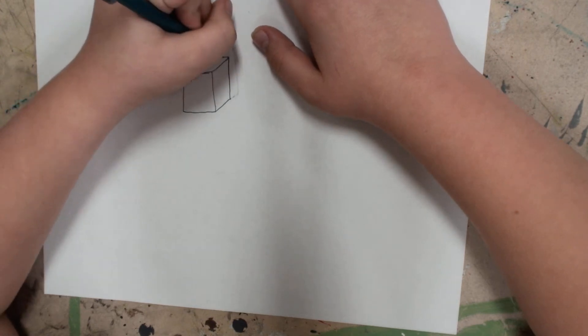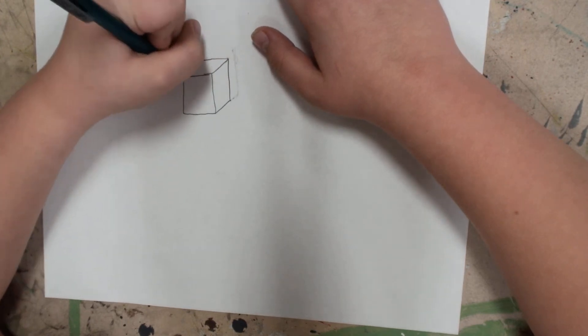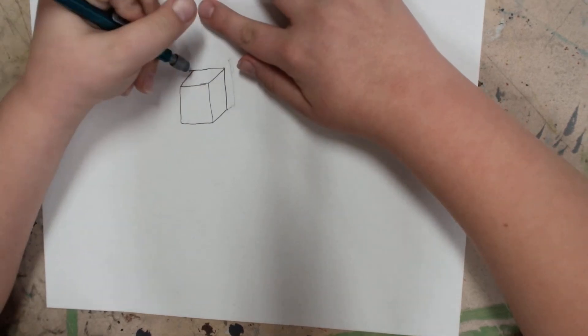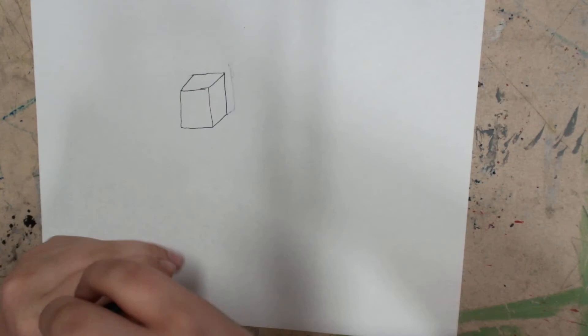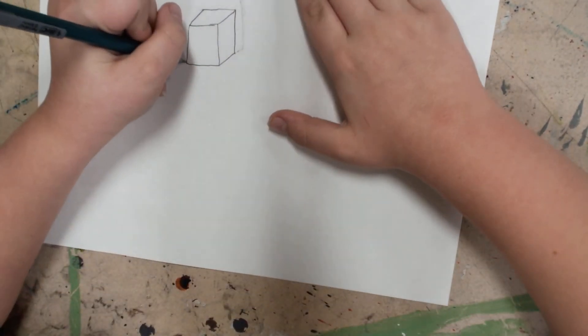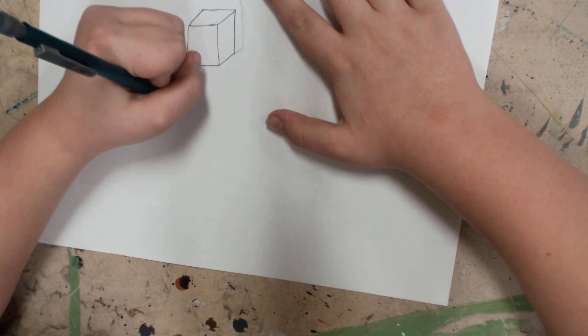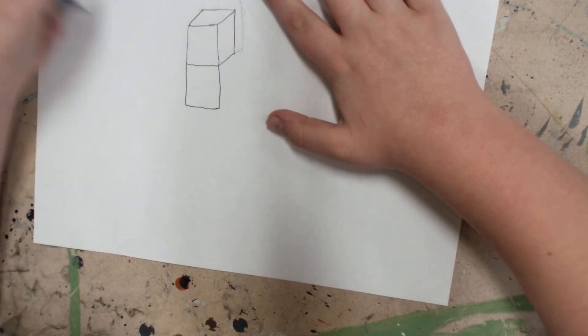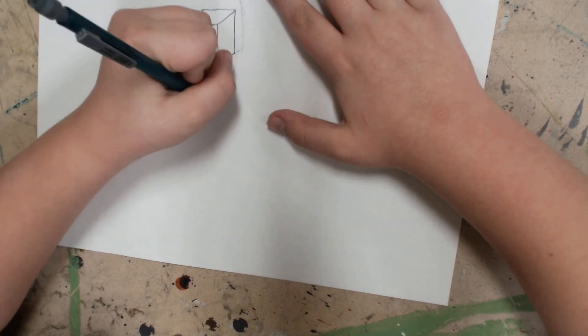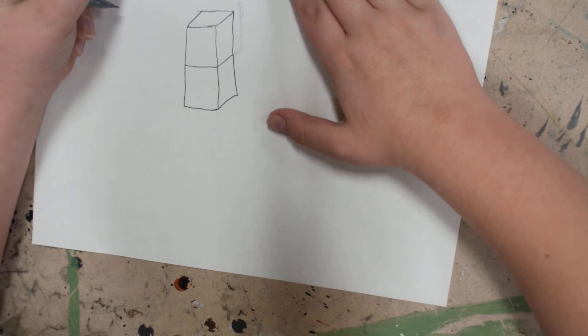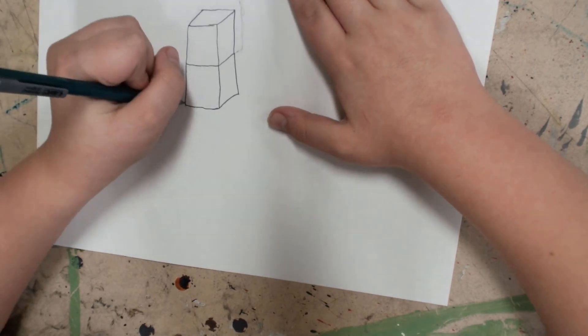Then just draw a straight line across and then a diagonal line connecting it. Then go down a little bit, make another square. Then under that, make another square.